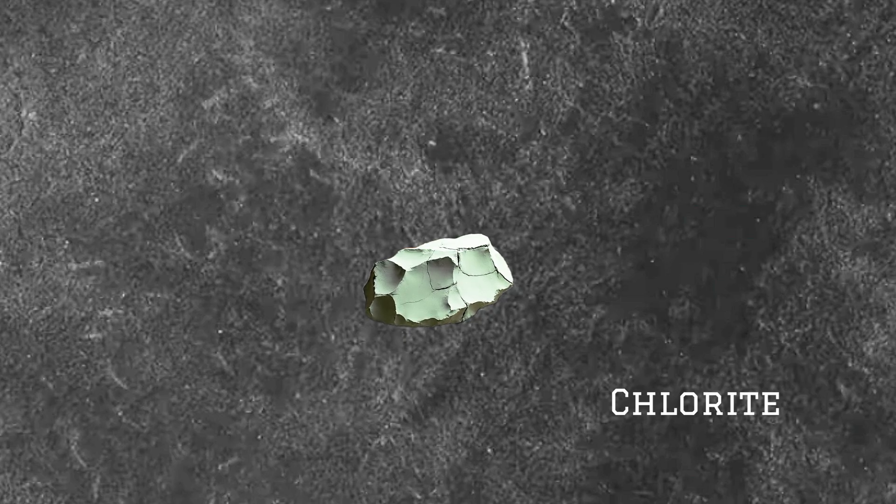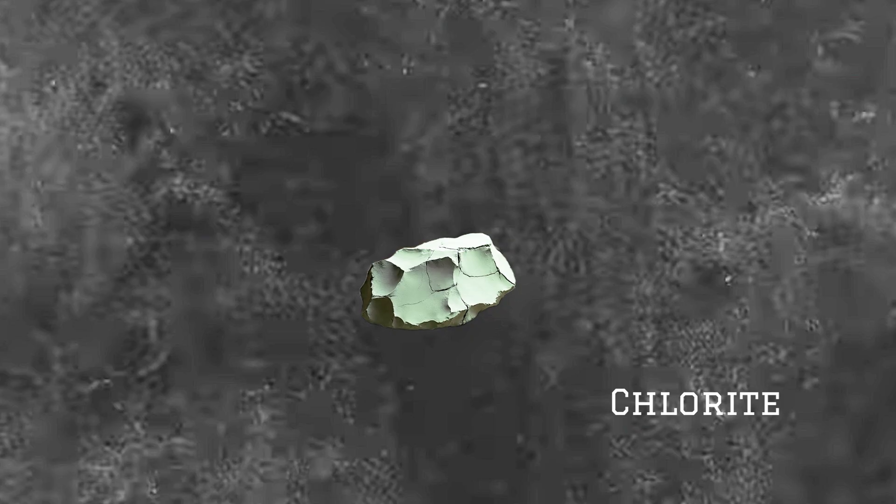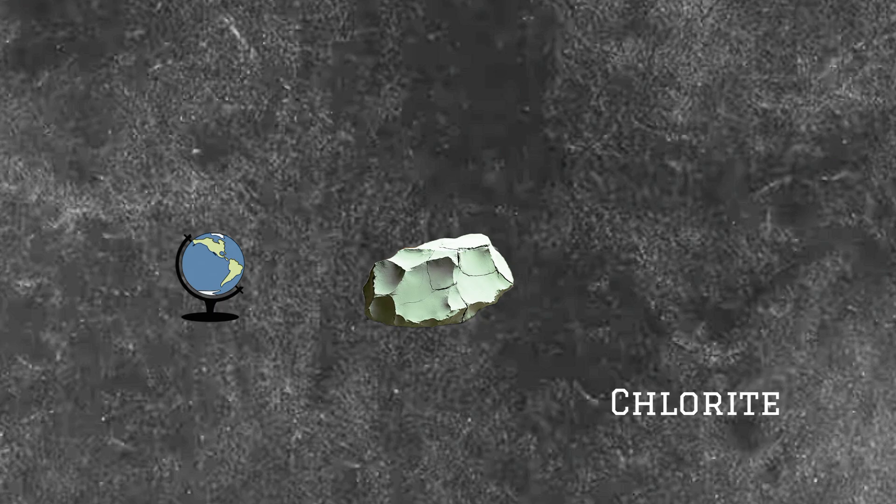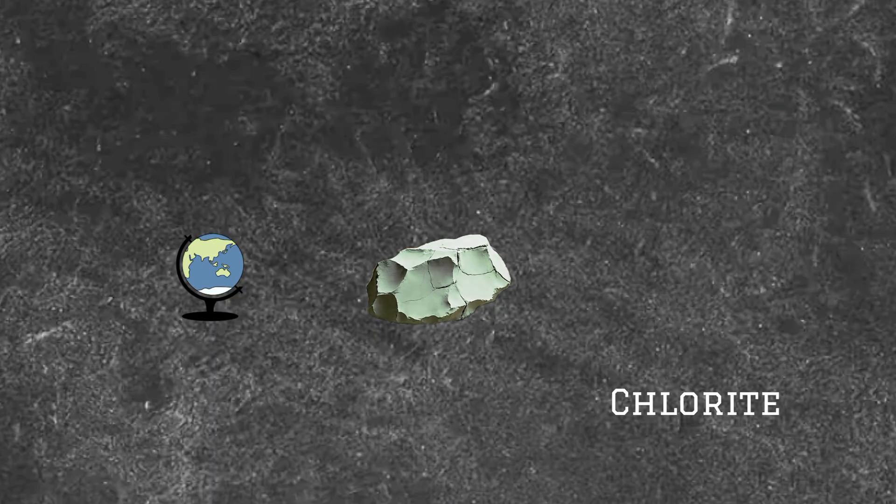Chlorite is a common mineral in low-grade metamorphic rocks, altered igneous rocks, and certain sedimentary rocks, and its distribution is global.